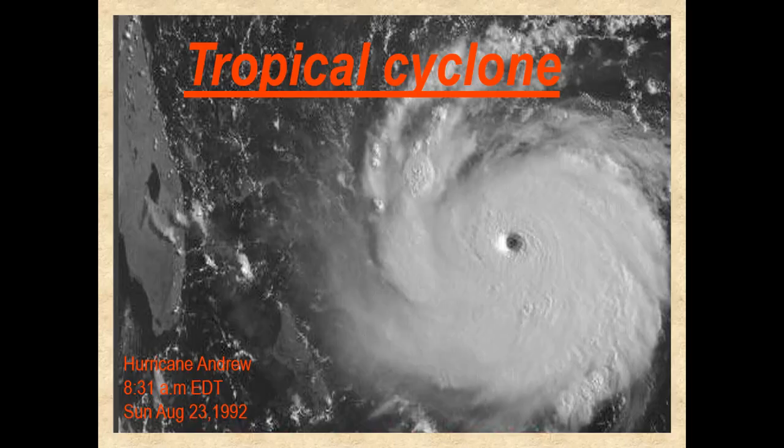Now we're going to move into the discussion on tropical cyclones. This satellite image of Hurricane Andrew was taken just before landfall in August of 1992, positioned to the east of South Florida. Andrew was one of the very few Category 5 hurricanes to make landfall in the United States, coming ashore near Homestead Air Force Base around Miami, Florida. It then crossed southern Florida, went back into the Gulf of Mexico, and made a second landfall in Louisiana. We can clearly see the eye where the air is sinking — a very distinctive feature of a tropical cyclone.